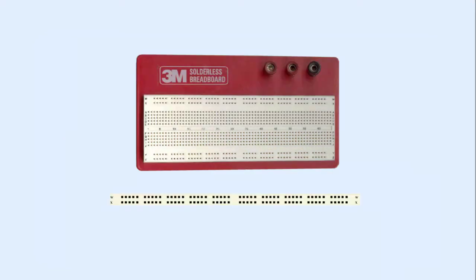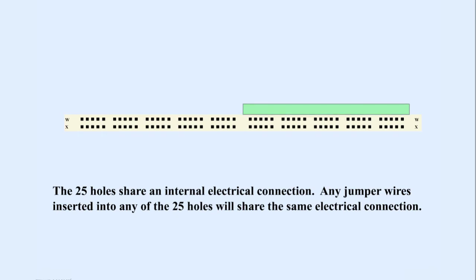The power bus is used to distribute a voltage or ground throughout the breadboard. The bus is divided into two rows of holes. Each row is further divided into two groups of 25 holes. The 25 holes share an internal electrical connection. Any jumper wires inserted into any of the 25 holes will share the same electrical connection.